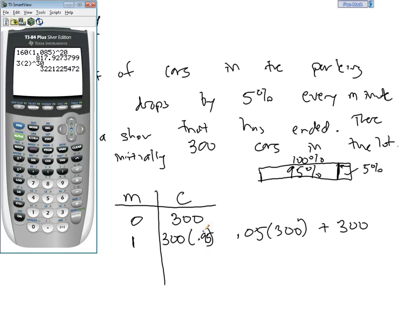And that should give me the same thing as taking 5% of 300. So I lose 15 cars in one minute. And then saying 300 minus 15 would tell me that there are 285 cars left.